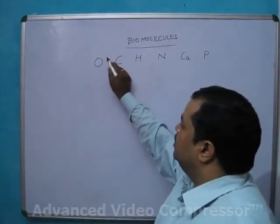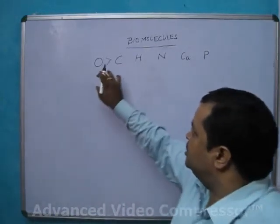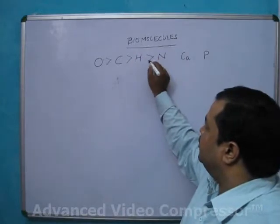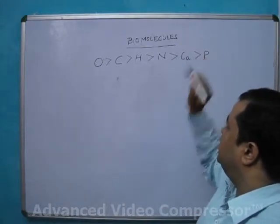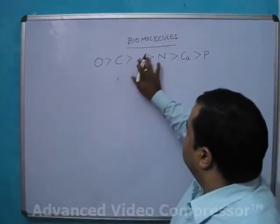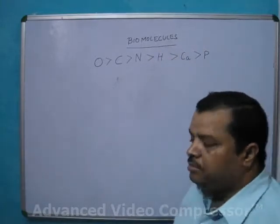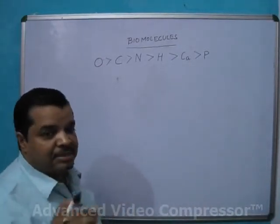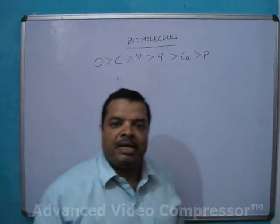They are in sequence: Oxygen percentage is highest among all present elements in the living beings, then Carbon, then Hydrogen, then Nitrogen, then Calcium, and then Phosphorus. Some other elements are there but the percentage is very minimal.